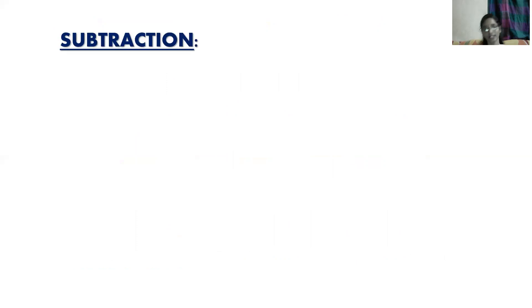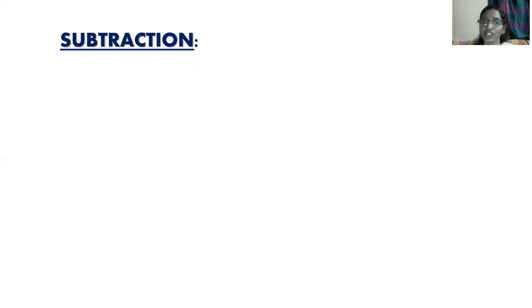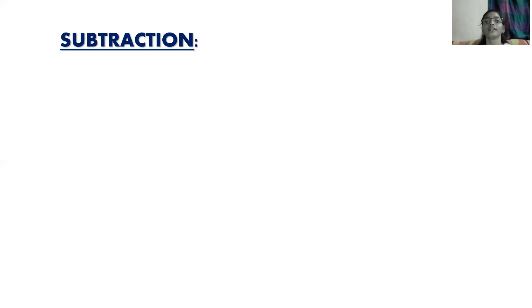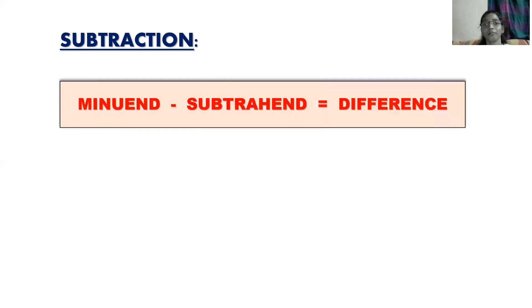Now let's start subtraction. In subtraction we deal with three terms. The first is the minuend, the second is the subtrahend, and the third is the difference. The larger number we subtract from is called the minuend, the number being subtracted is the subtrahend, and the result is called the difference. Minuend minus subtrahend gives you the difference.